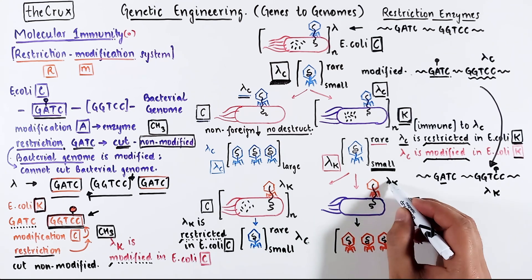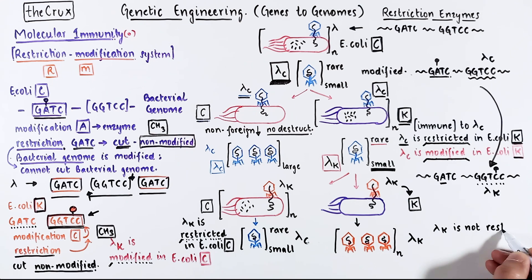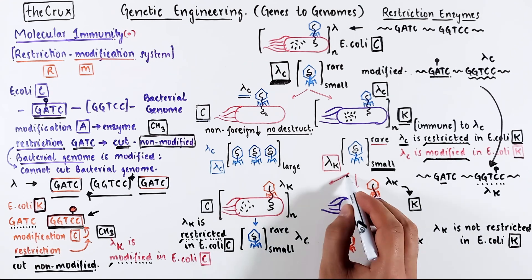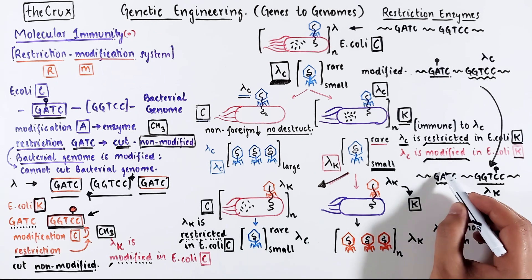When lambda K reinfects E. coli K, now it will detect this modification. And because of the modification, the restriction enzymes will not be able to cut the DNA. But when lambda K infects E. coli C, well E. coli C does not care about GGTCC. It only looks for GATC. If it is missing the modification on GATC like we saw in the beginning, lambda K will be restricted in E. coli C.